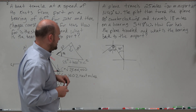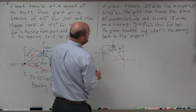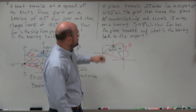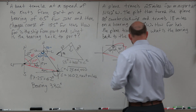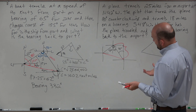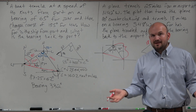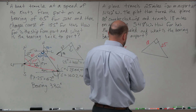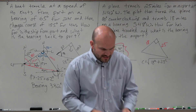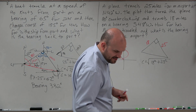The question asks how far the plane has traveled from the airport, and what is the bearing back. We need to find the hypotenuse. We've traveled 25 miles in the northwest direction and 18 miles in the southwest direction. Using the Pythagorean theorem: c equals the square root of 18 squared plus 25 squared. Rounding to the nearest mile, c equals 31 miles. So the plane is 31 miles away from the airport.